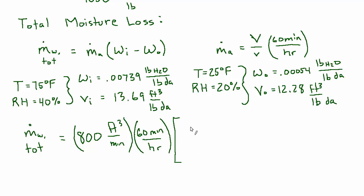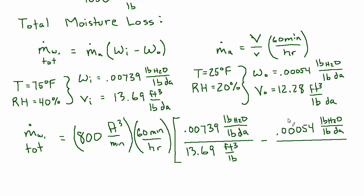So we'll do the inside first because that's the high humidity: 0.00739 over 13.69 cubic feet per pound. And by the way, you're welcome to work in grains, I chose to work in pounds here. Sometimes it's easier to use grains because you'll have a bigger number, probably an integer number. For the outside term we have a humidity ratio of 0.00054 and a specific volume of 12.28.